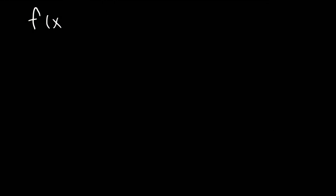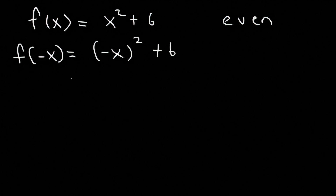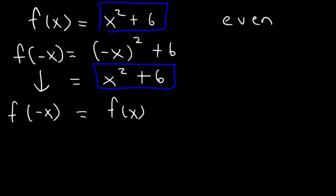Now what about f of x equals x squared plus 6? Is it even or odd? Well, x squared is an even component because it has an even exponent. What about 6? Well, 6 is the same as 6x to the 0 power. Anything raised to the 0 power is 1, and 0 is an even exponent. So the whole thing is going to be even. Let's prove it: replace x with negative x. Negative x squared is positive x squared, so we have x squared plus 6, which is the same as the original function. So f of negative x equals f of x — it's an even function.